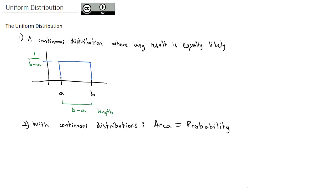Area gives us the probability. As we talk about continuous distributions, whenever I use the word area, I'm also talking about its probability. And whenever I talk about probability, I'm also talking about its area. These words almost become interchangeable as we work with continuous distributions. Let's take a look at what this looks like with the uniform distribution.